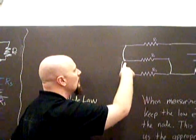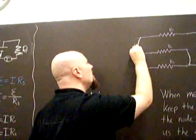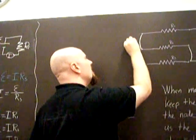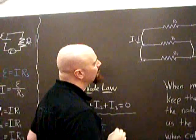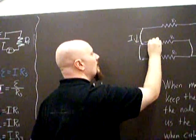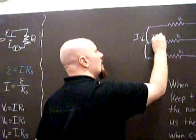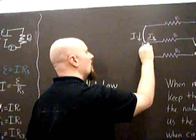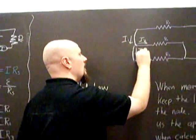So here is our node. Here is our node. So we'll have current coming in this way. That will be I1. And then current going out, I2. And then more current going out, I3.